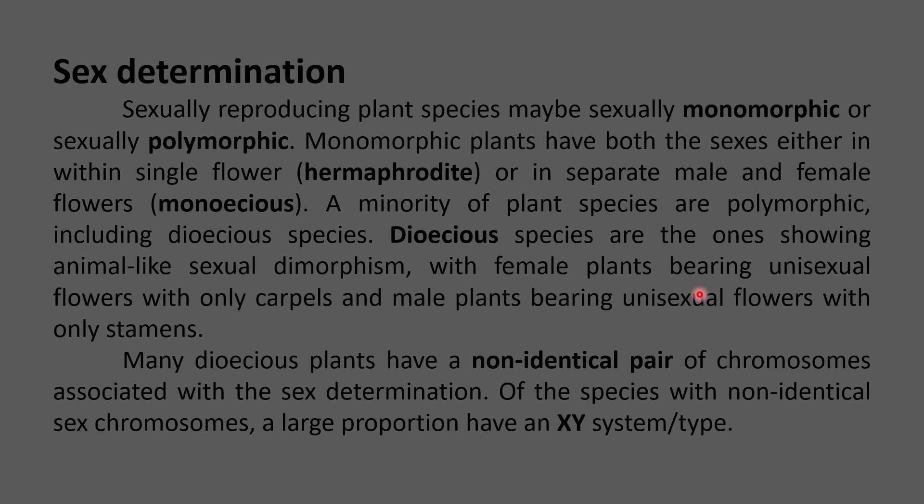Sexually reproducing plant species may be sexually monomorphic or sexually polymorphic. In sexually monomorphic plants, individual plants have both sexes in them. The sexes can be present within a single flower, as found in hermaphrodite plants, or they are present in separate male and female flowers of the same plant, which are called monoecious flowers.